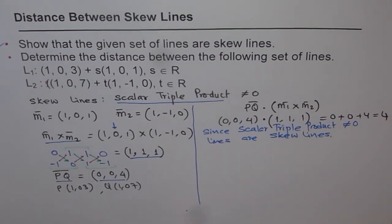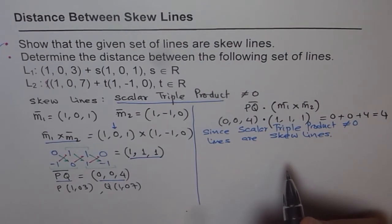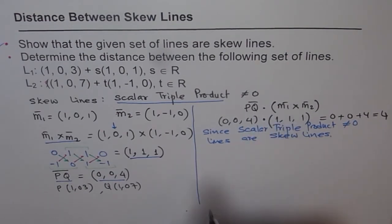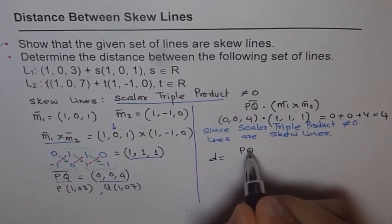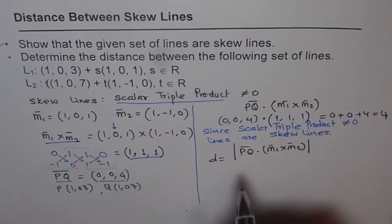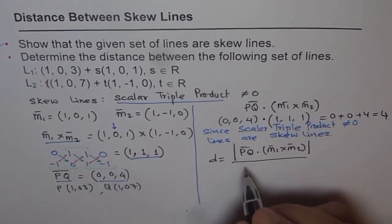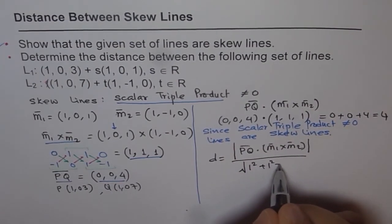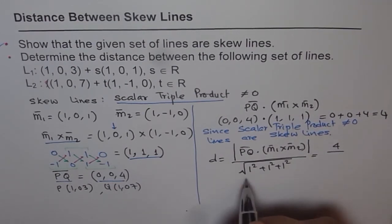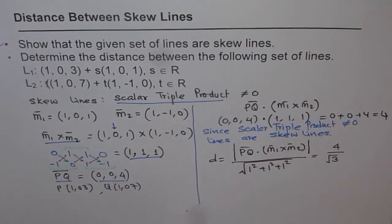That completes the first part — showing the lines are skew. Now for the distance between skew lines: the formula is Distance = |PQ · (M1 × M2)| / |M1 × M2|. The magnitude of M1 × M2 = (1,1,1) is √(1² + 1² + 1²) = √3. We already found PQ · (M1 × M2) = 4. So the distance = 4 / √3.